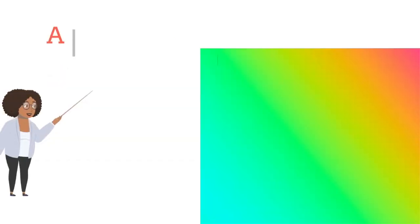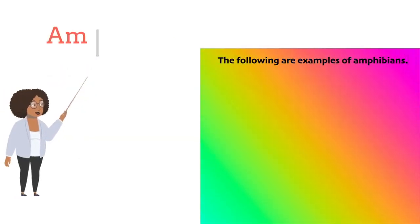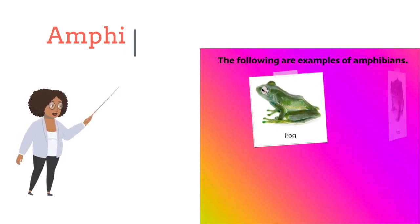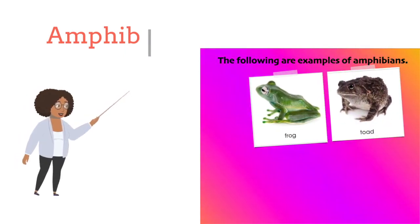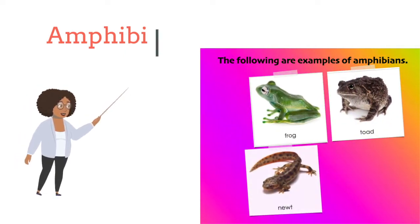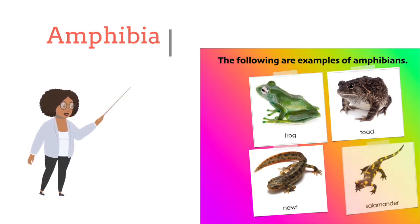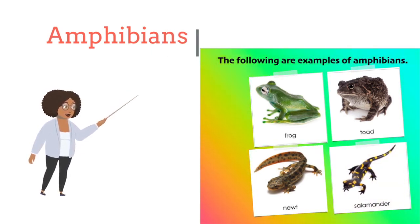In this lesson, we will cover amphibians. Examples of amphibians include the following: 1. Frogs, 2. Toads, 3. Newts, and 4. Salamanders.